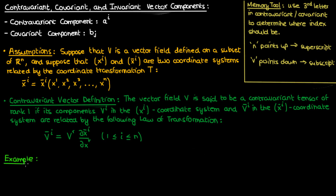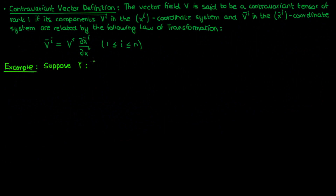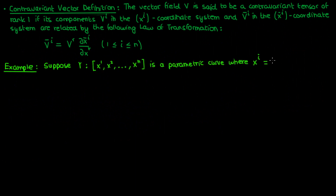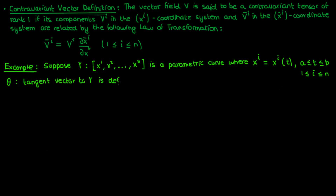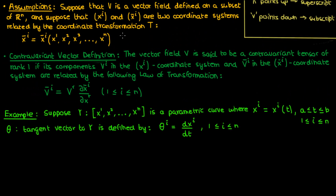Let's briefly go over an example of a contravariant vector. Suppose that I had a finite parametric curve gamma in Rn which was defined using each of its coordinates xi as functions of time, where the time lies between two real limits a and b, and i is a free index from 1 to n. If you've seen my differential geometry series then you'll recall that this is how we define parametric curves. You might also recall that the tangent vector to the parametric curve, which I'll denote by theta, is just found by differentiating each of these xi's with respect to t. Note that theta super i is the i-th component of the vector theta, where i again is a free index that varies from 1 to n.